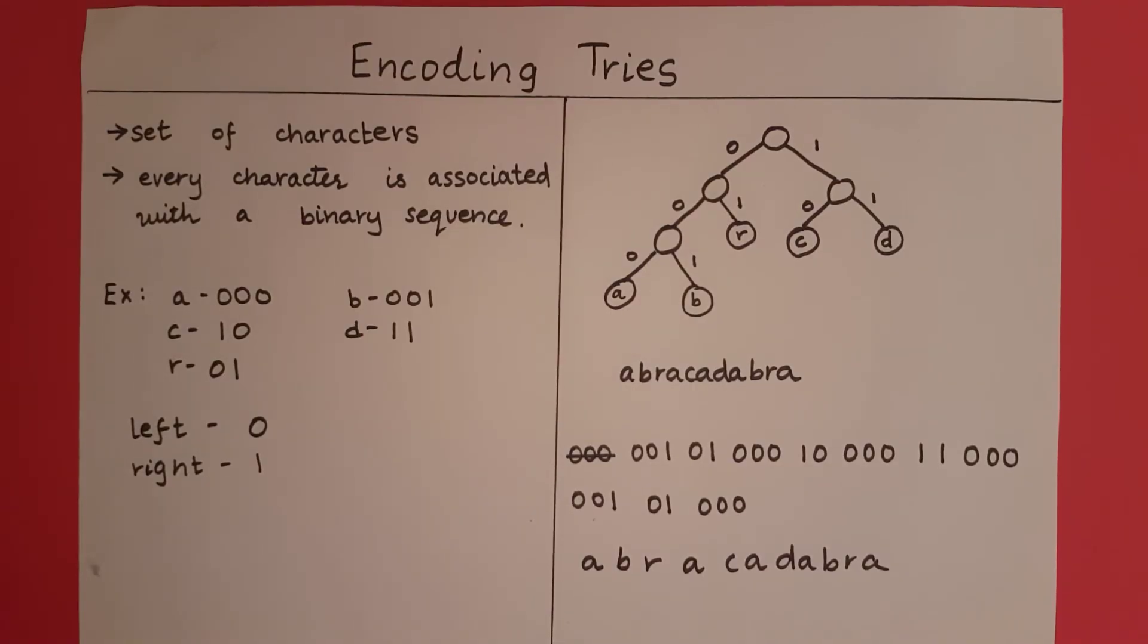So what we should take away from this is all the characters need to be placed at leaf nodes. Why? Because no two characters should share a common prefix in their binary sequences. Why? Because this leads to conflict when we are trying to traverse the code and ascertain the characters.